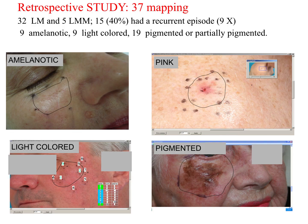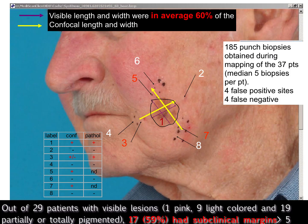We have applied this technology with a little square of images progressing slowly on the face of patients. It's especially useful when the lesions are partially amelanotic or completely amelanotic, as in this study. We found that the visible length and width were on average 60% of the confocal length and width. In 29 of our 37 patients, we had subclinical margins of more than 5 mm.